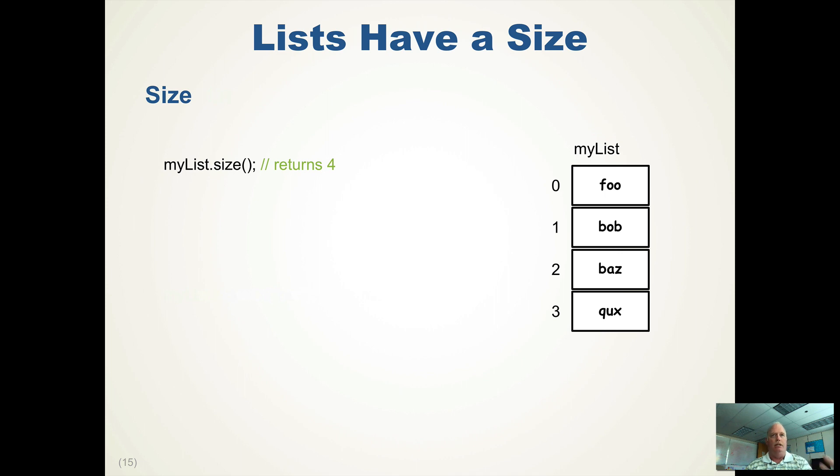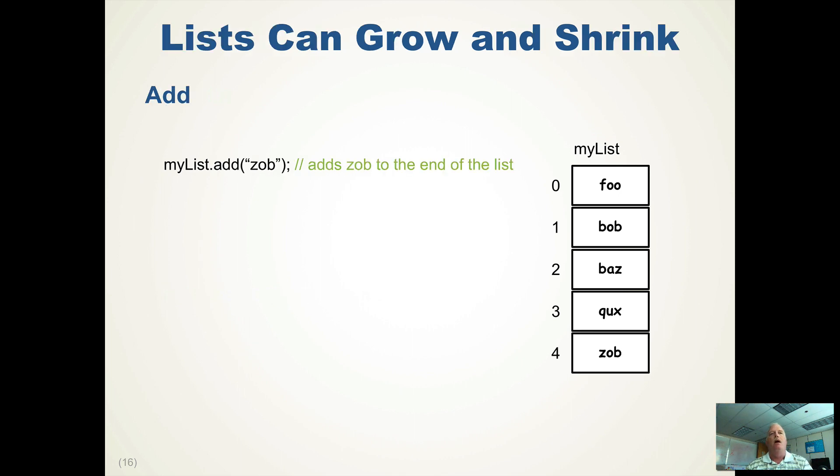So lists have a size. The size method for myList returns four because I have four items in it. I can add things. So I said myList add zob. So it had four items in it. Zob will be added to the end of the list and the list size automatically is incremented. So it returns five. So we always get the correct size of our list.